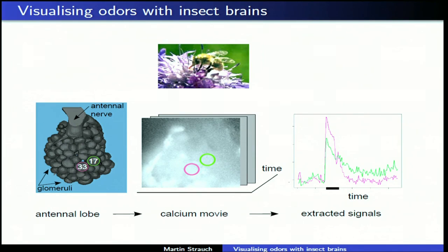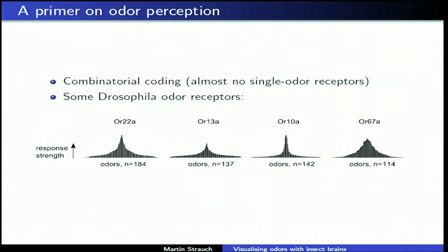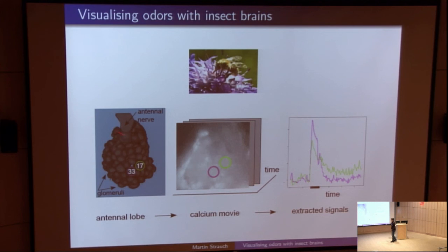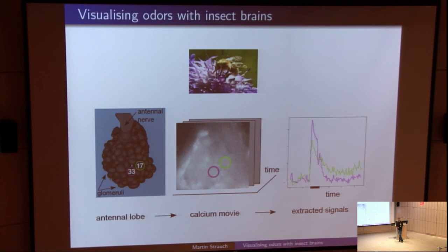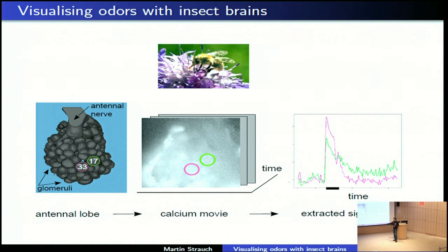How do we get access to these odour receptor measurements? Think of a honey bee smelling an odour. The odour receptors on the antenna start to fire action potentials, which are relayed via the antennal nerve into a brain structure called the antennal lobe. In this antennal lobe, we get a very compact summary of everything on the antenna — all the odour receptors. Each spherical unit called a glomerulus integrates signals from a whole bunch of receptor neurons dispersed across the antenna. The odour response patterns are now available in compact form in the antennal lobe, and that's where we can record them.